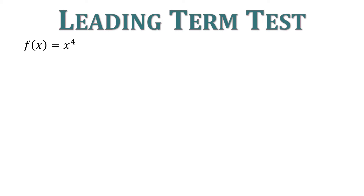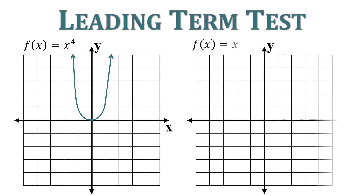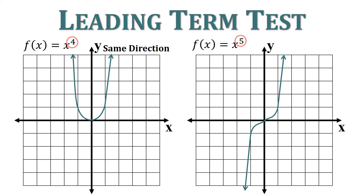Leading term test — let's see what this means. With f of x equals x to the fourth, both ends are going up. With f of x equals x to the fifth, the ends are opposite. Comparing 4 and 5: 4 is even, 5 is odd. So whenever we have an even power, our ends are going to go in the same direction. When we have an odd power, our ends are going to go in opposite directions.